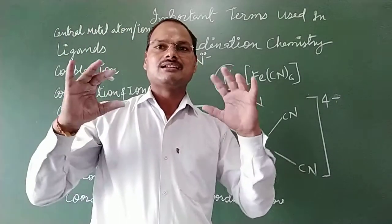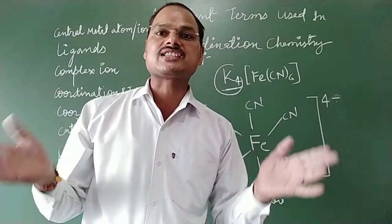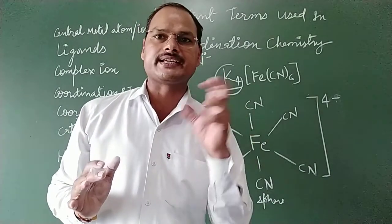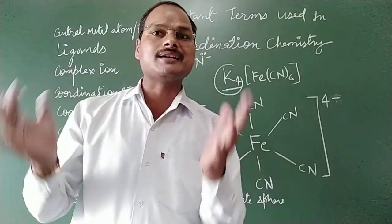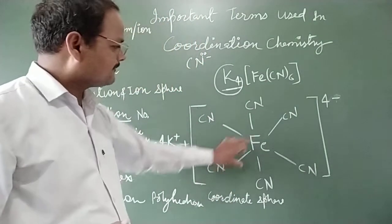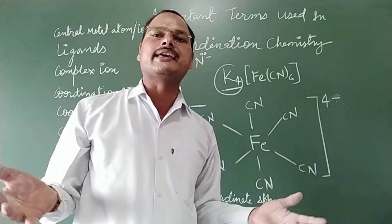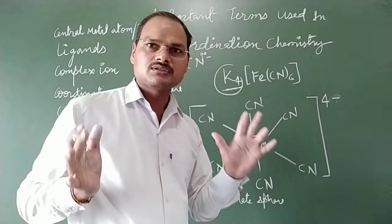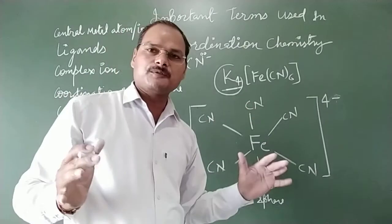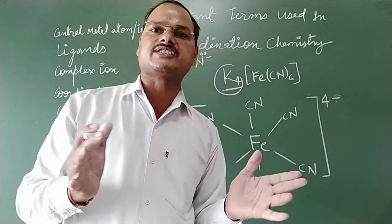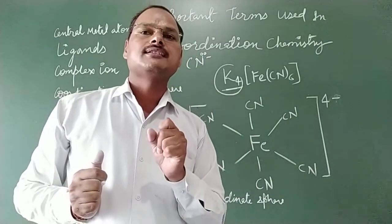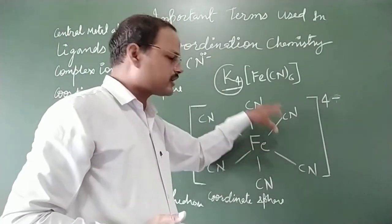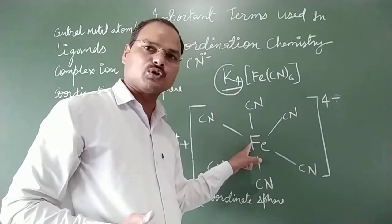The next term is coordination number. Coordination number means the number of atoms or ions which surround a central metal atom. Here you can see the central atom is surrounded by six CN⁻ ions, and therefore the coordination number for iron in this compound is six.